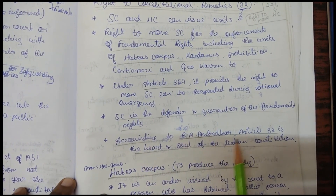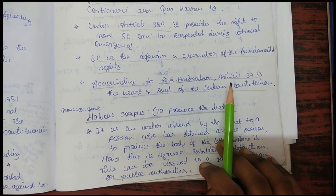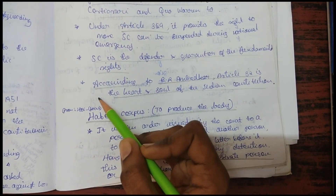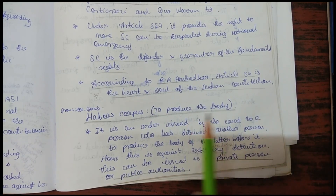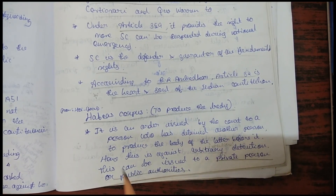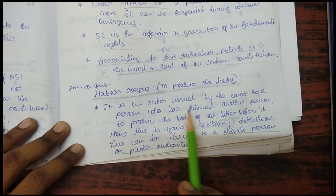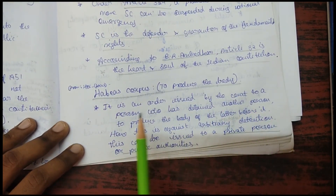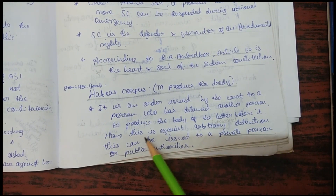According to Dr. B.R. Ambedkar, Article 32 is the heart and soul of the Indian constitution — please make a note of this, it is very important. Regarding the writs, habeas corpus means 'to produce the body.' It is an order issued by the court to a person who has detained another person, directing them to produce the detained person before the court.